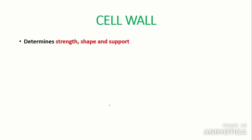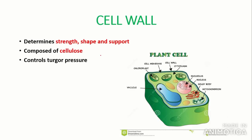Next we're going to talk about the cell wall, again in green as it is only present in plant cells. The function of the cell wall is to determine the strength, shape and support of the cell. It is composed of cellulose in eukaryotic cells — cellulose is a polymer of beta glucose. It also controls turgor pressure, providing resistance to osmotic changes and therefore regulating water content. The outermost layer of this plant cell is a cell wall composed of cellulose providing rigidity and support.